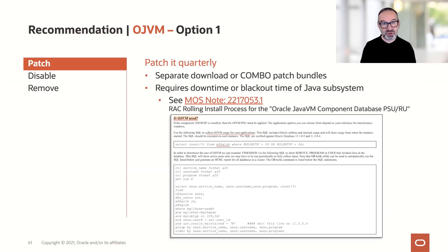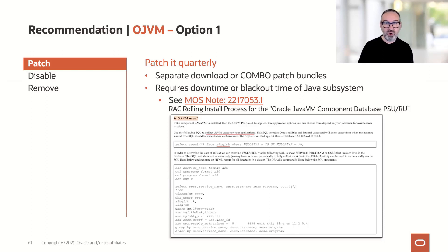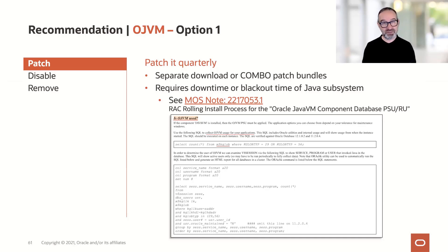Use separate downloads or the combo patches. A downside with OJVM patching is it requires downtime or a blackout of the Java subsystem. The good thing is, if you have a RAC environment, since around the 18.5 or 18.6 patch bundle, OJVM can be applied rolling in a RAC environment with only a blackout to the Java subsystem. If no application is using OJVM in the database, that blackout doesn't matter — it's not a blackout to your entire database. The Java subsystem needs to be restarted, and if no Java application is using OJVM, who cares? So it's important that you can apply the OJVM patch in a rolling fashion in a RAC environment.